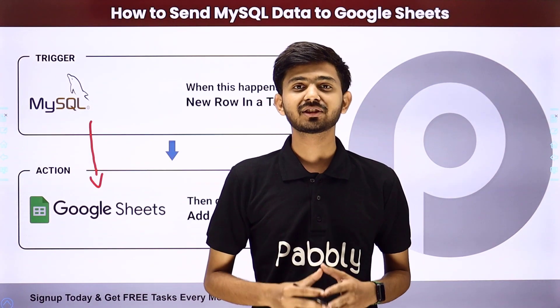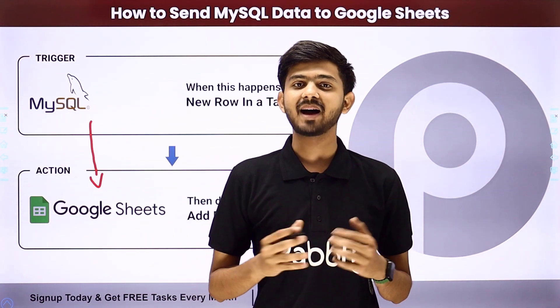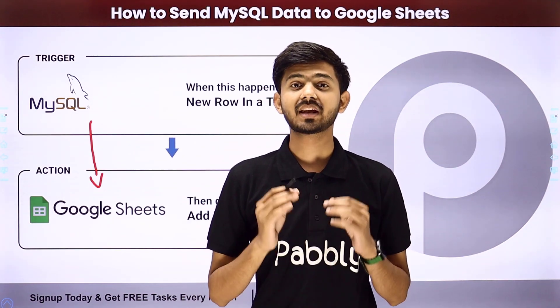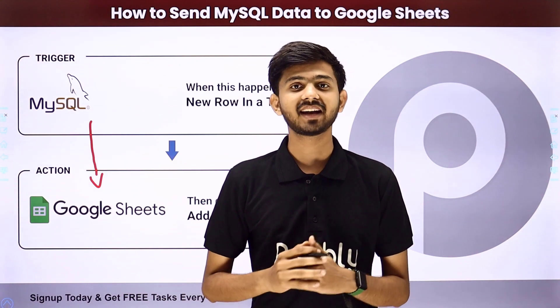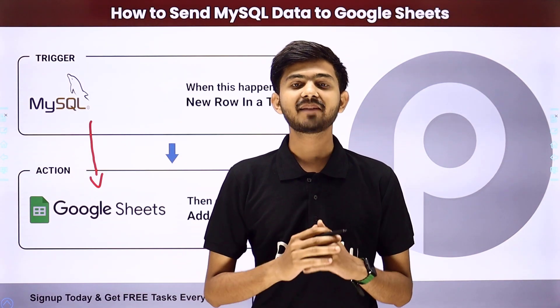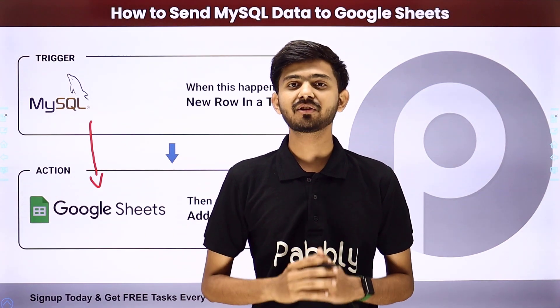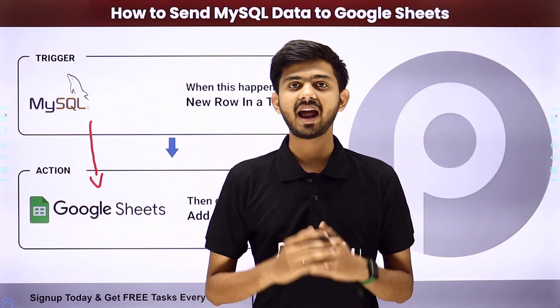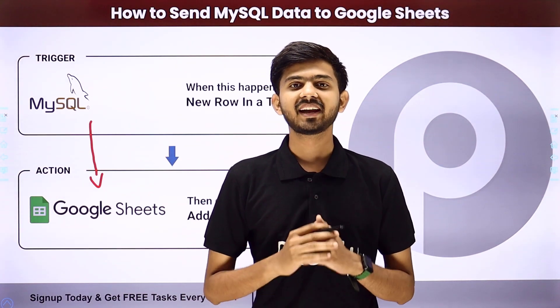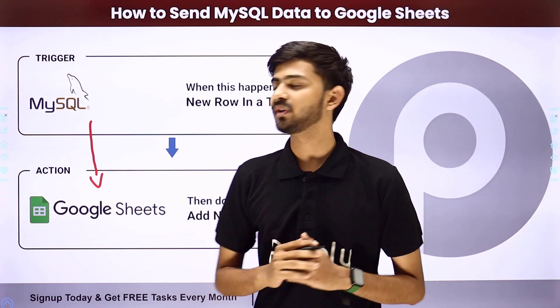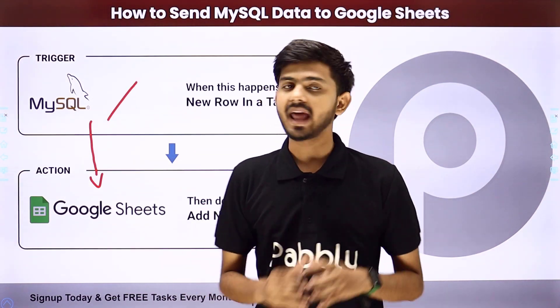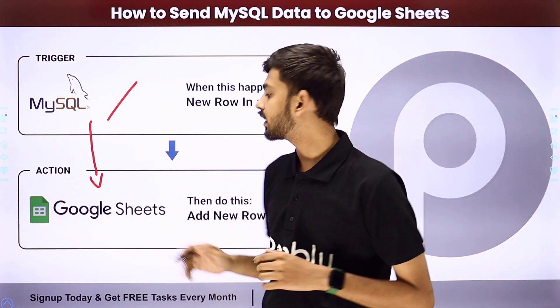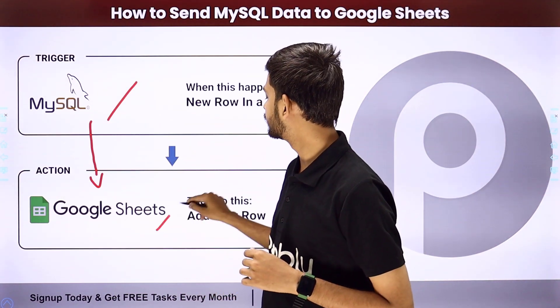For creating this integration, we are going to use PabblyConnect, which is an amazing software for automation and integration. In PabblyConnect, we are going to use Trigger and Action. In the Trigger application, we are going to use MySQL. In the Action application, we are going to use Google Sheets.